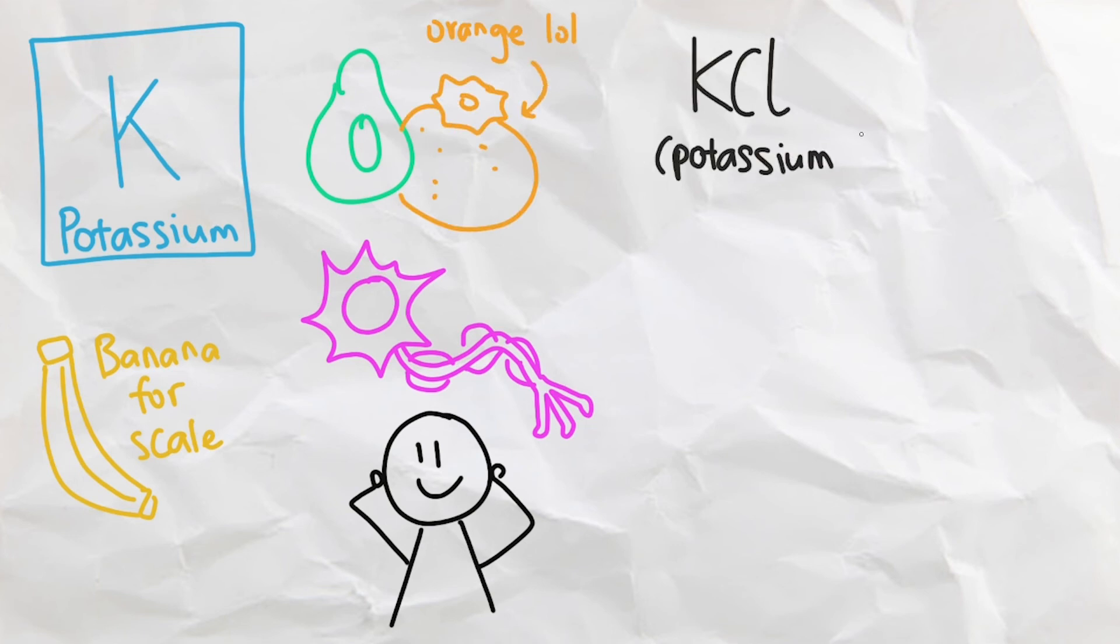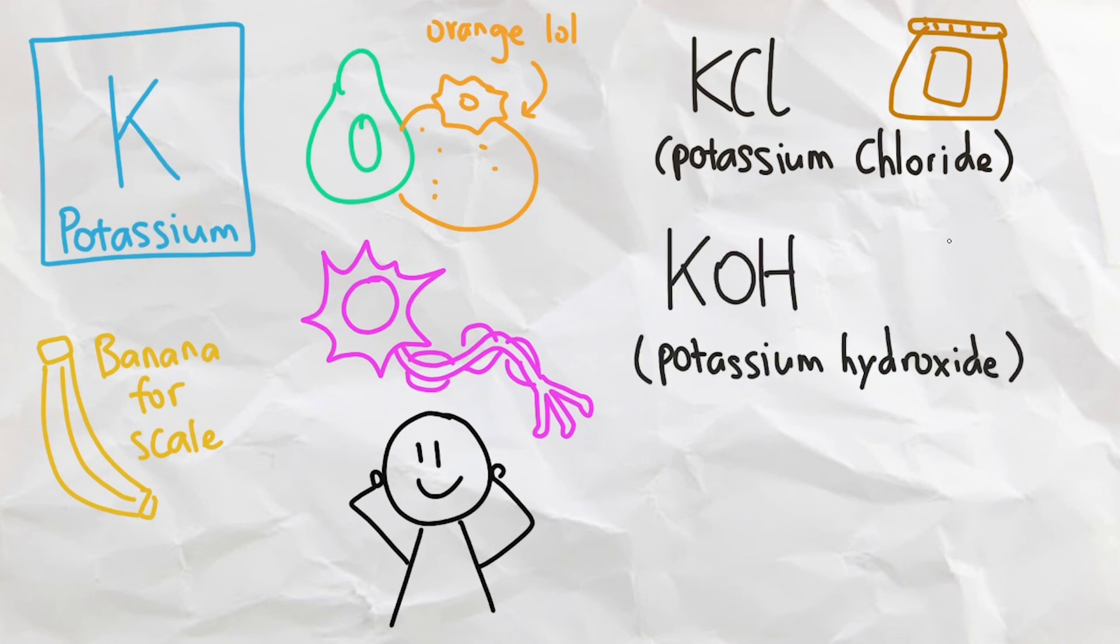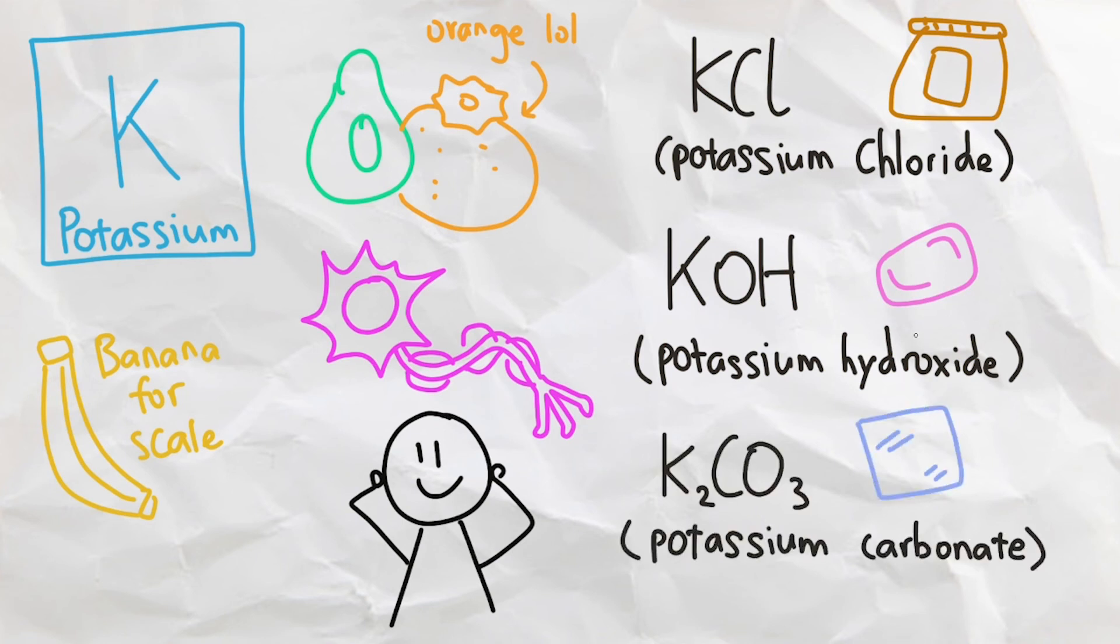Potassium also forms many important compounds, such as potassium chloride as an ingredient for fertilizers, potassium hydroxide as an ingredient for soaps and detergents, and potassium carbonate as an ingredient for glass.